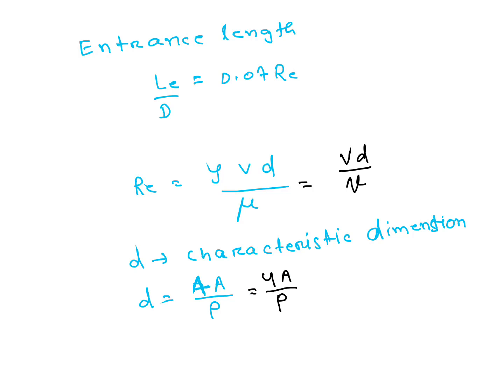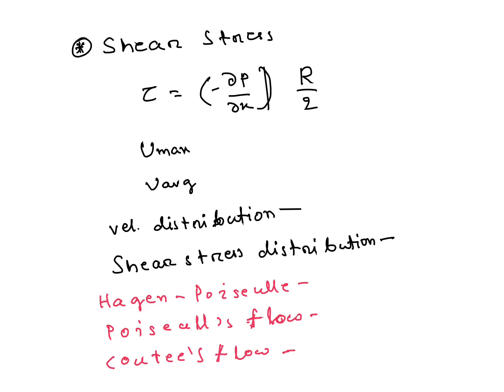Then shear stress distribution in pipe flow, its formula is this one. Twice they asked in ISRO examination and GATE examination also once they asked this. Velocity maximum is 2 times average velocity in pipe flow. Average velocity is (1/μ)(-dp/dx)(R²/8). Velocity distribution is parabolic, and shear stress distribution is linear.